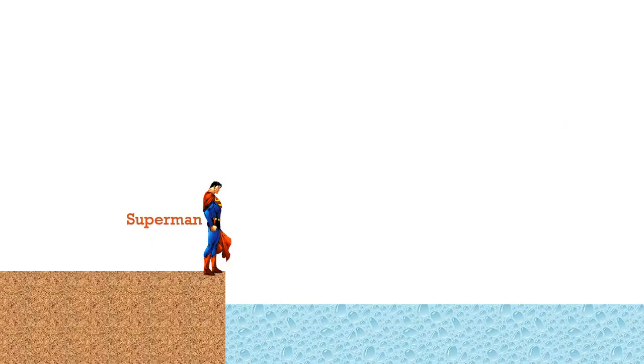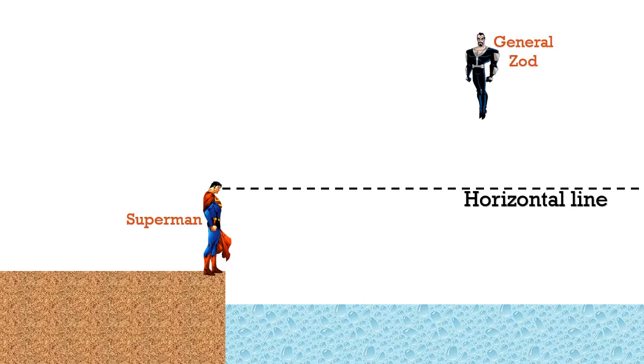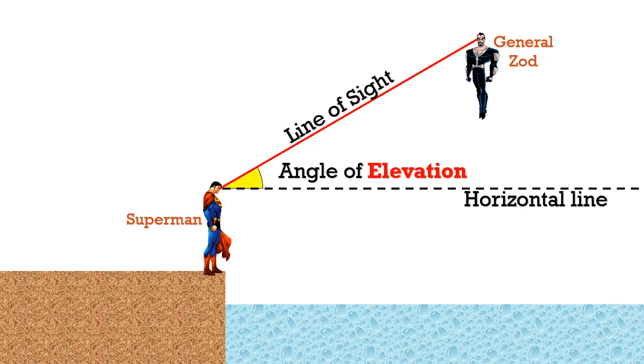So we begin today's lesson with Superman standing on a cliff, harmlessly looking out into the sea. His line of sight is a horizontal line. Now along comes General Zod. He has to raise his line of sight up to General Zod, so his laser beam eyes form the line of sight and that makes an angle above the horizontal line that we shall call the angle of elevation.